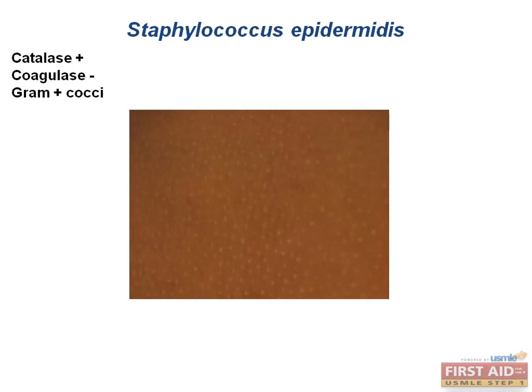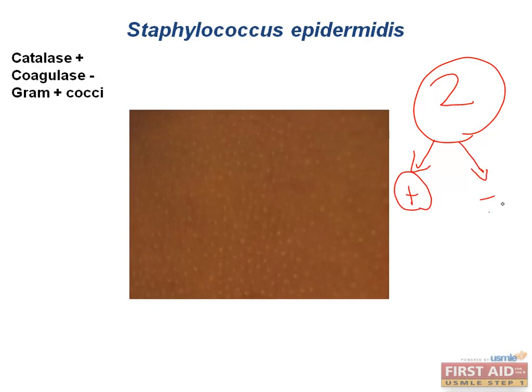Blood cultures must be drawn from two separate sites. If one comes back positive but the other is negative, you can fairly strongly conclude it was likely a contamination. Staph epidermidis is a known cause of infection related to prosthetic devices, including prosthetic valve-related endocarditis. Empirically, you would treat such an infection with vancomycin until you have susceptibilities.